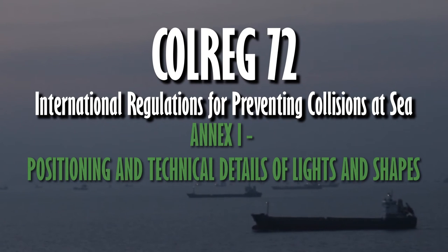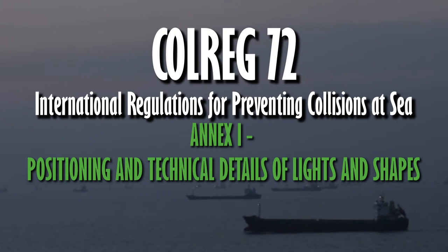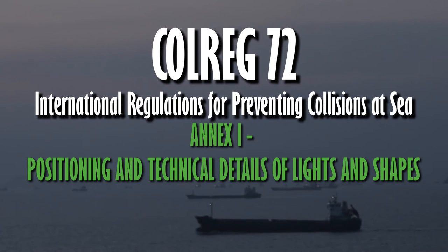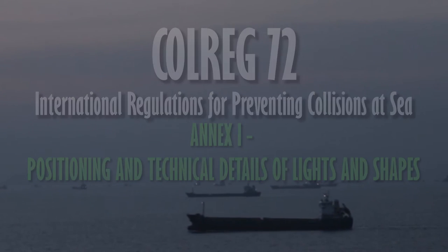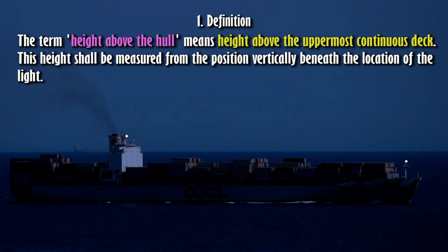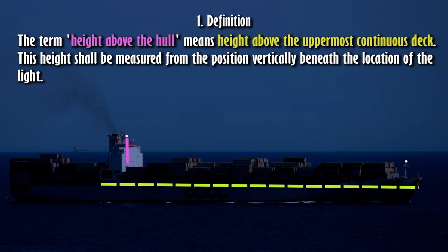International Regulations for Preventing Collisions at Sea, Annex 1: Positioning and Technical Details of Lights and Shapes. Section 1 — Definition: The term 'height above the hull' means height above the uppermost continuous deck. This height shall be measured from the position vertically beneath the location of the light.